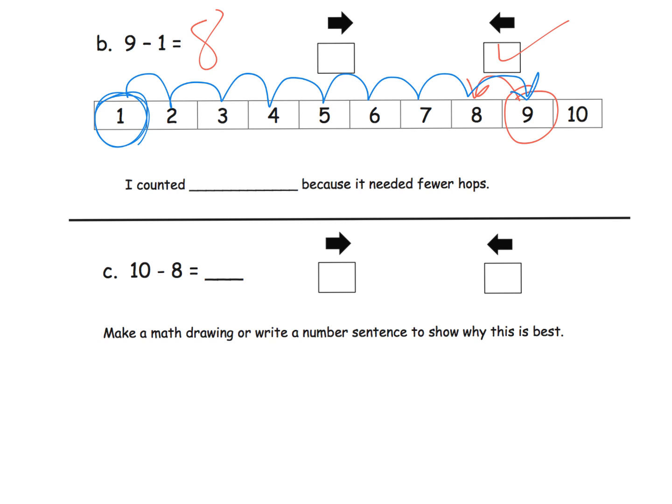In both cases, we get the answer of 8. It's just up to the students to choose what method they prefer. Please don't create an atmosphere where students become paralyzed because they're afraid they're not going to use the most efficient or the best method. In either case, the answer is 8. But I think I counted back because it needed fewer hops. That's kind of the point.